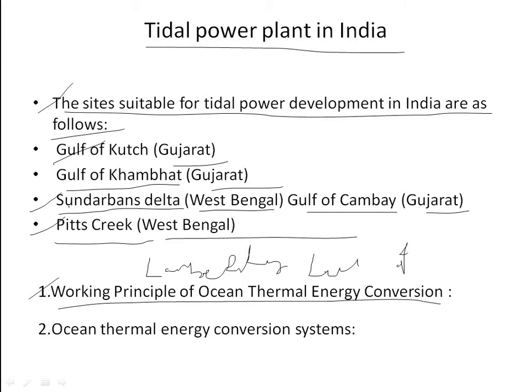The utilization of this ocean thermal energy — where a suitable temperature difference exists between warm surface water and cold deep water in tropical oceans — by its conversion into mechanical work forms the basis of the OTEC system. The warm surface water can also be used to heat a low boiling point refrigerant to obtain high-pressure vapors which can run a gas turbine to obtain mechanical work.